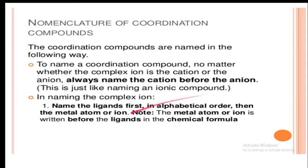The second rule: when naming the complex ion, name the ligands first in alphabetical order, then the metal atom or ion. Note that the metal atom or ion is written before the ligands in the chemical formula.